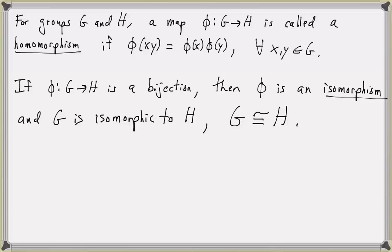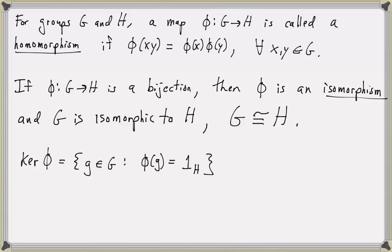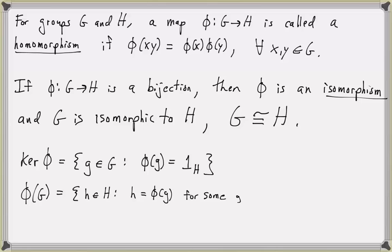Some other notation that goes along with homomorphisms: the kernel of phi, which is actually a subgroup and in particular a normal subgroup of G, consists of all elements in G that get mapped to the identity element of H — so phi of g equals the identity of H, denoted 1 sub H. This is called the kernel of phi. The image of phi, phi of the group G, is the set of all elements h in the group H such that h equals phi of some element g in G. This is called the image.